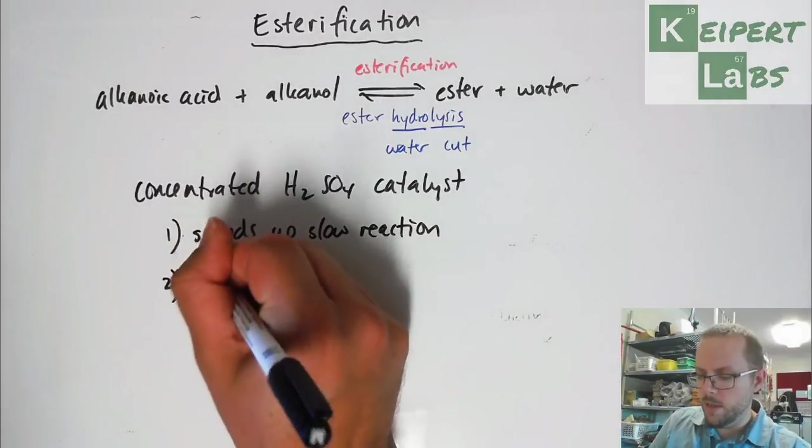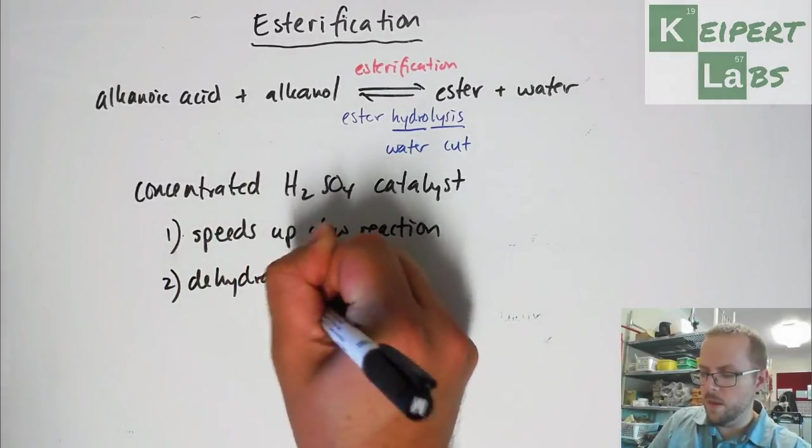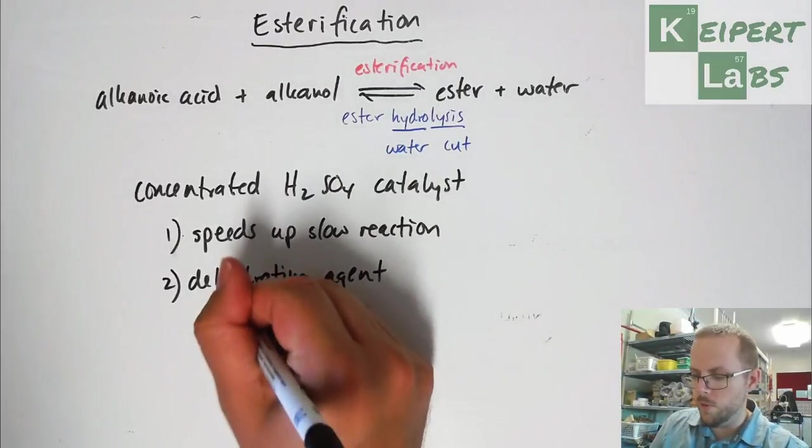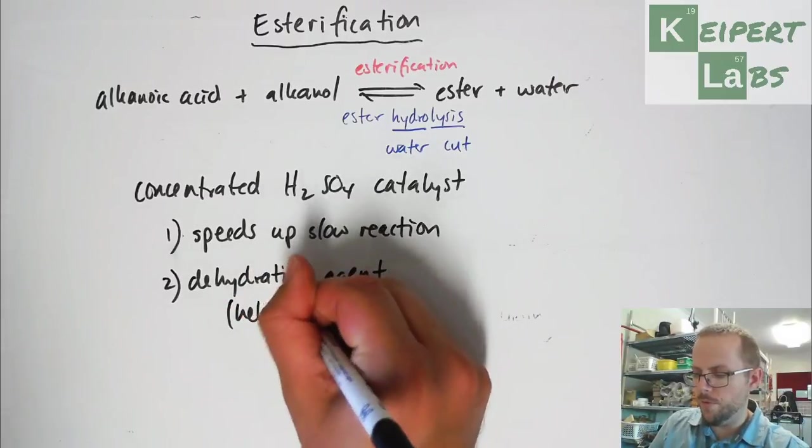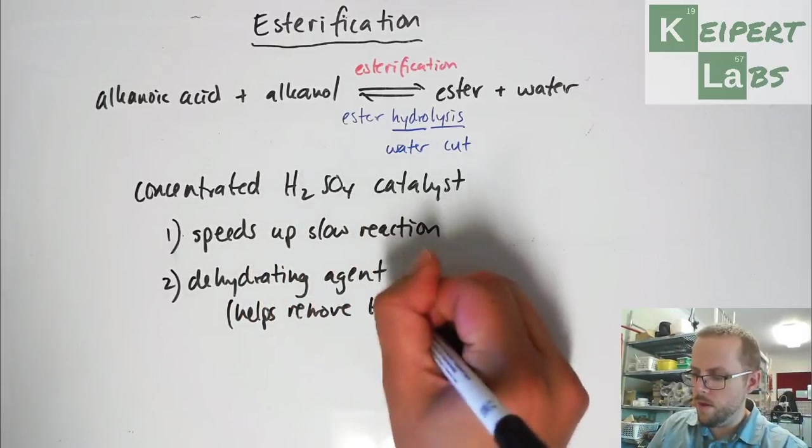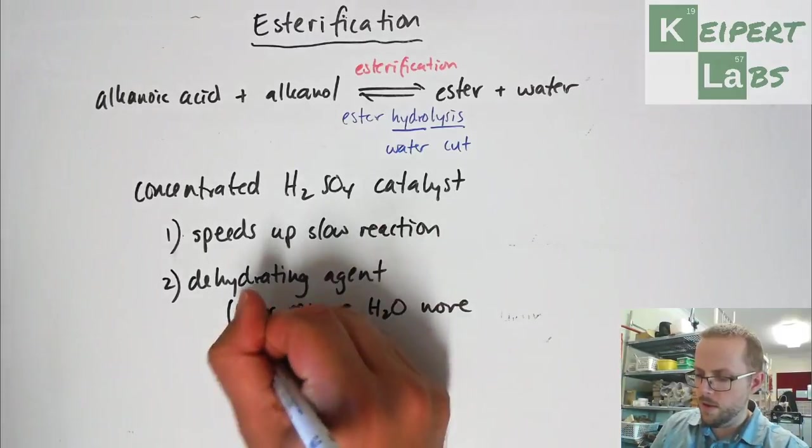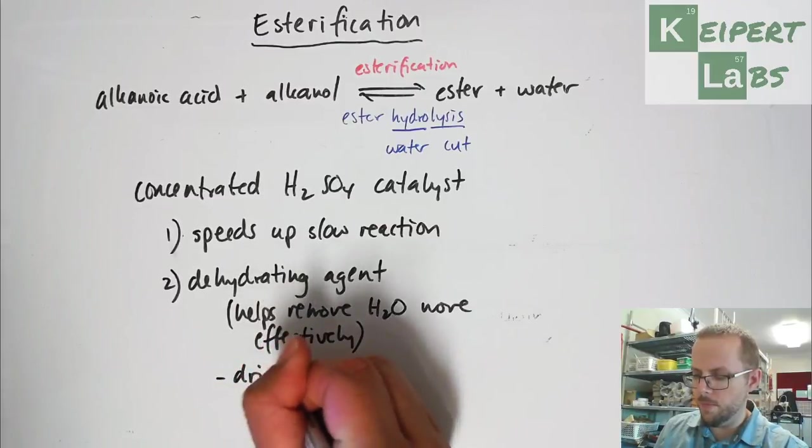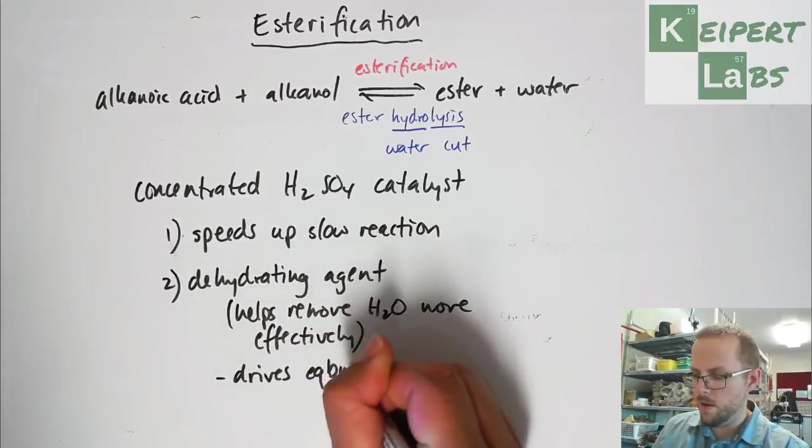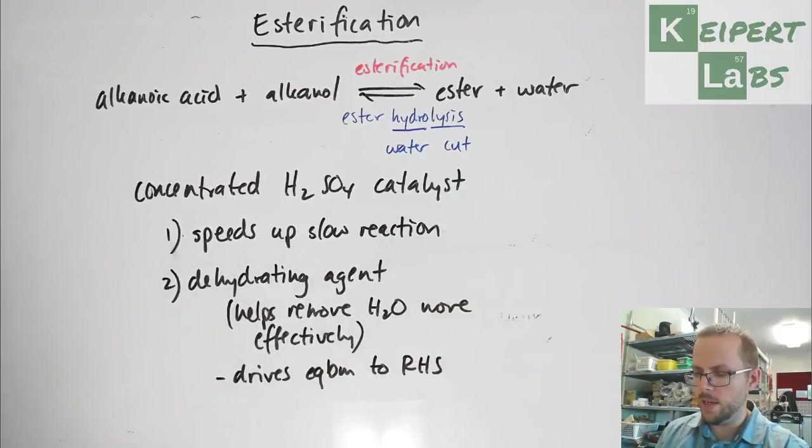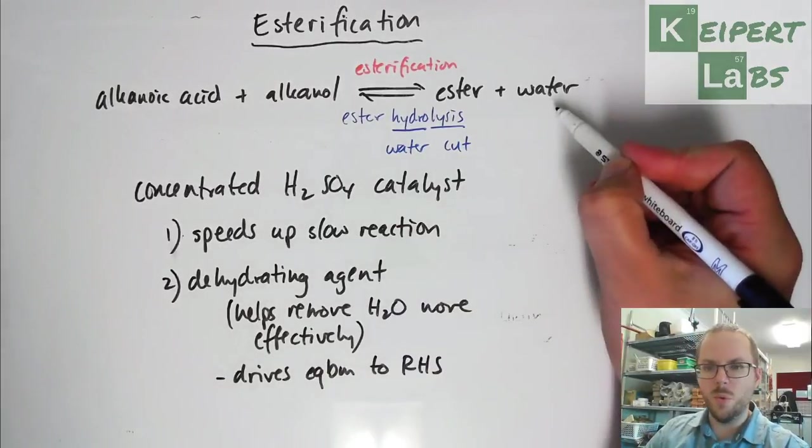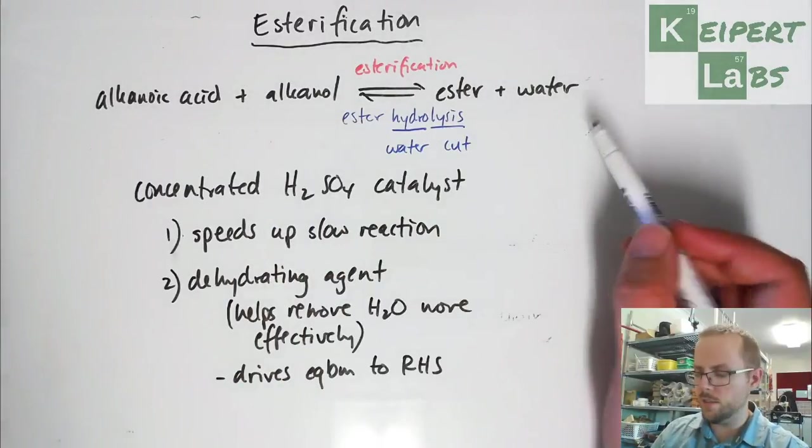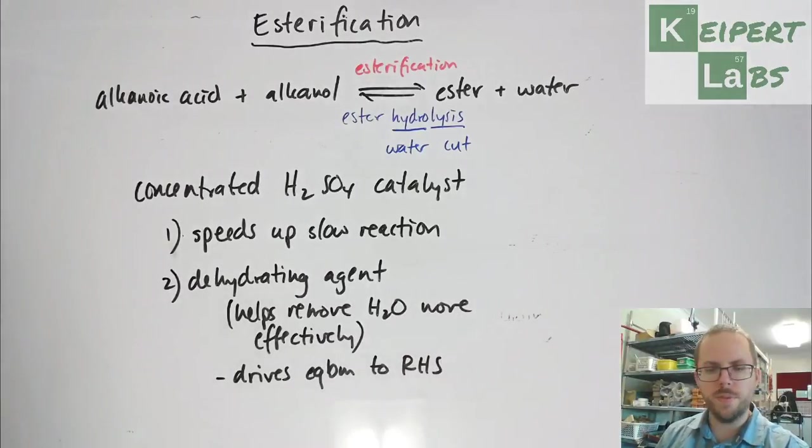And what it also is, is we say it's a dehydrating agent. That is the mechanism by which the sulfuric acid does it, is that it helps to remove the water more effectively, which drives the equilibrium towards the right hand side. So it means that by removing that water more effectively and taking it out so that then we can continue to drive the reaction to the right. So it makes it faster and it dehydrates it to make it more effective.